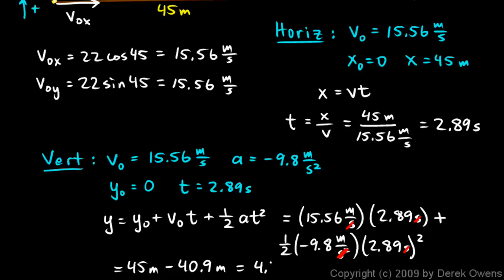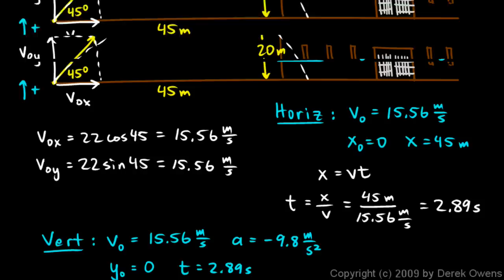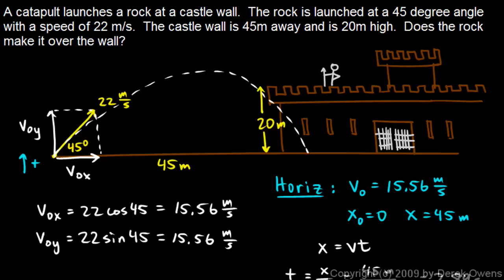Now the 4.1 meters, that's the height at the moment when it is horizontally at the wall. So the answer to the question then, does the rock make it over the castle wall? The answer to the question is no. But again just writing the answer isn't sufficient. You want to show all this work and show that you understand how to do it.